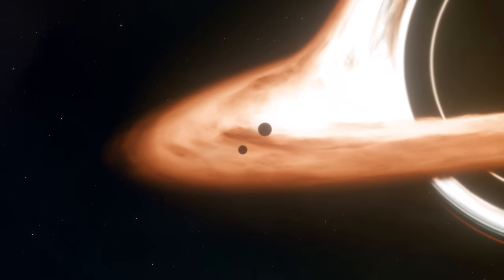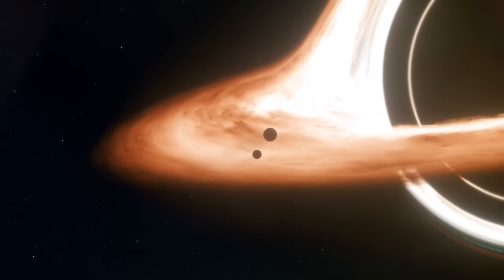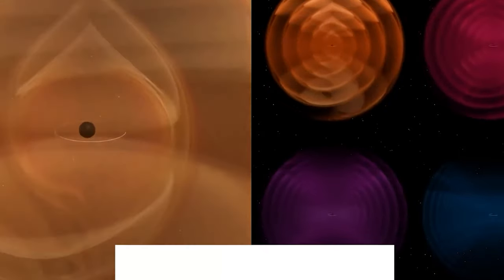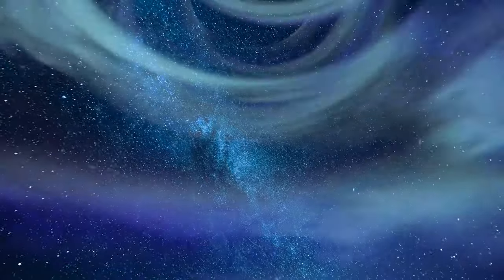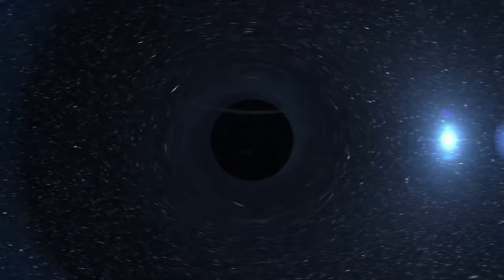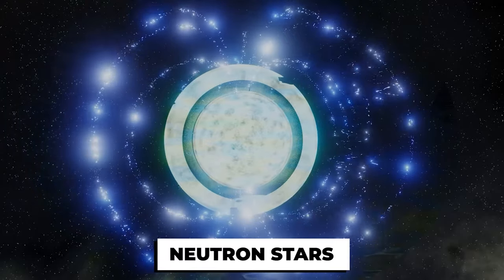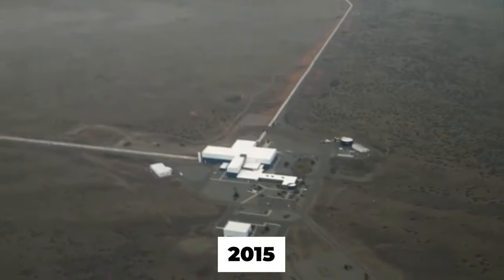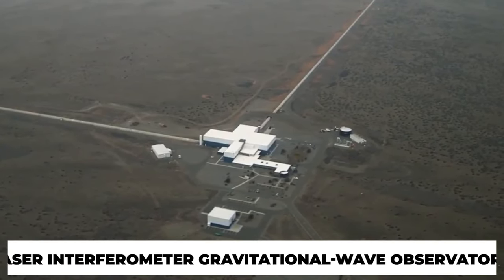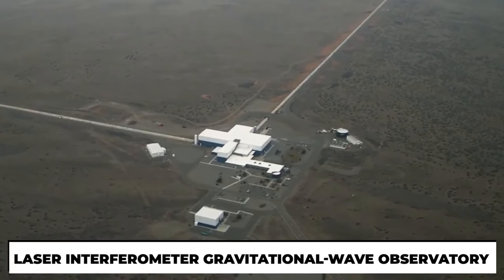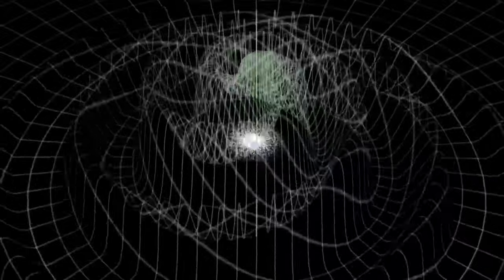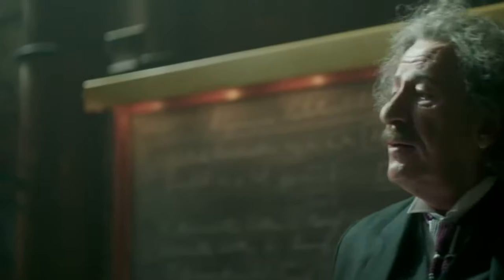One of the most significant developments in regards to black holes is the discovery of black hole gravitational waves. Gravitational waves are ripples in space and time that are produced by the movement of massive objects, such as black holes and neutron stars. In 2015, the Laser Interferometer Gravitational Wave Observatory detected the first ever gravitational waves, confirming a prediction made by Einstein's theory of relativity over 100 years ago.